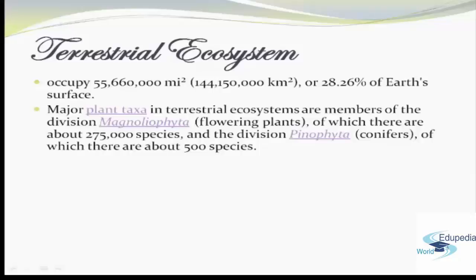Major plant taxa in terrestrial ecosystems are members of the division Magnoliophyta, or flowering plants, of which there are about 275,000 species, and the division Pinophyta, of which there are about 500 species.